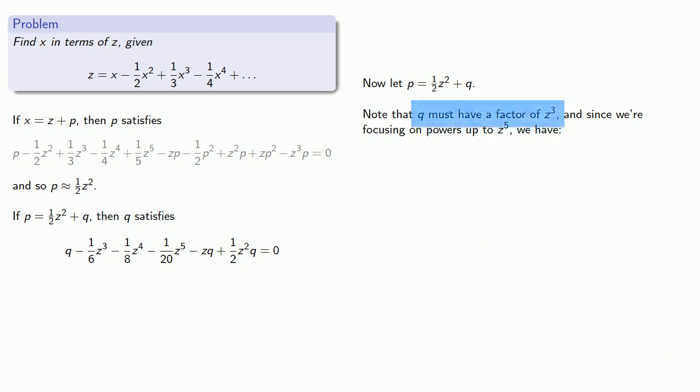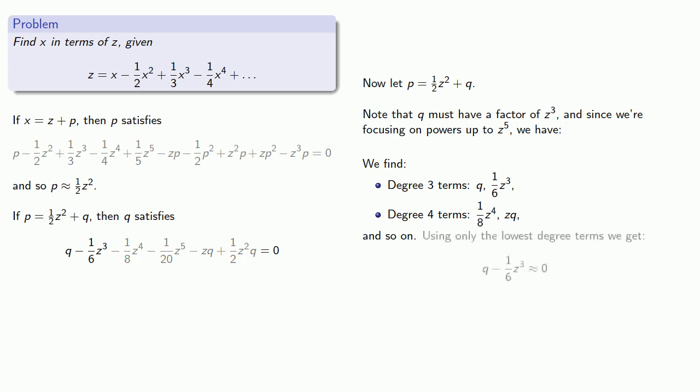So, again, remember Q is assumed to have a factor of Z to the third. And again, focusing on the lowest degree terms, we find that the degree three terms are going to be Q itself and one-sixth Z cubed. And then we'll have degree four terms like one-eighth Z to the fourth ZQ and so on. But again, these higher ordered terms can be ignored. And so, using only the lowest degree terms, we get the equation Q minus the sixth Z cubed is approximately zero. And that gives us Q is approximately one-sixth Z cubed.